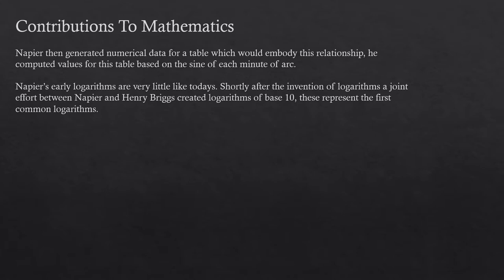He then generated numerical data for a table which would embody this relationship. He computed values for this table based on the sine of each minute of arc. Napier's early logarithms are very little like today's. Shortly after the invention of logarithms, a joint effort between Napier and Henry Briggs created logarithms of base 10. These represent the first common logarithms.